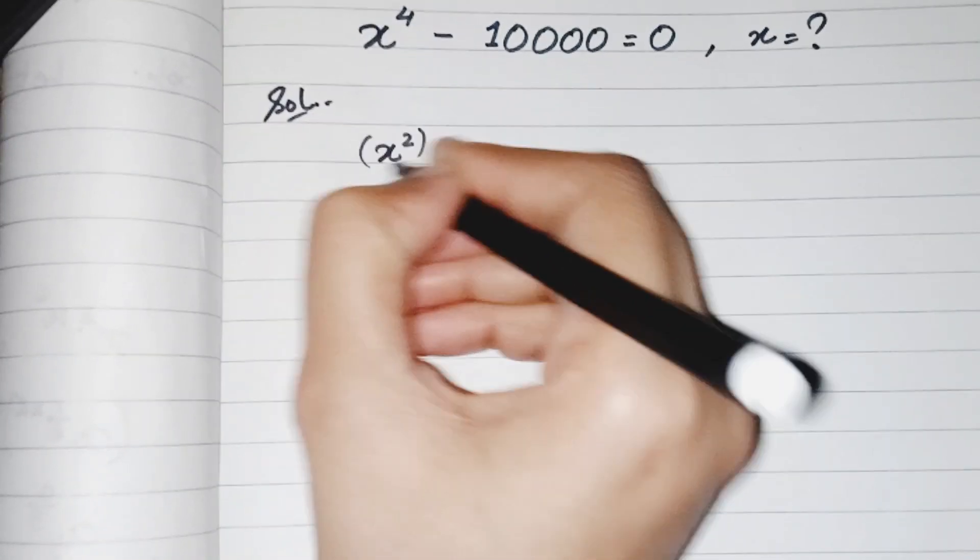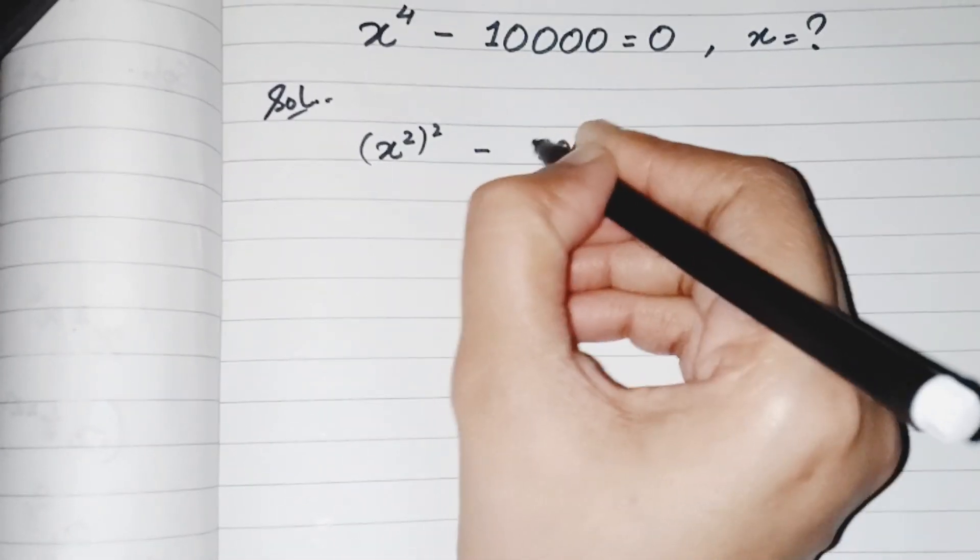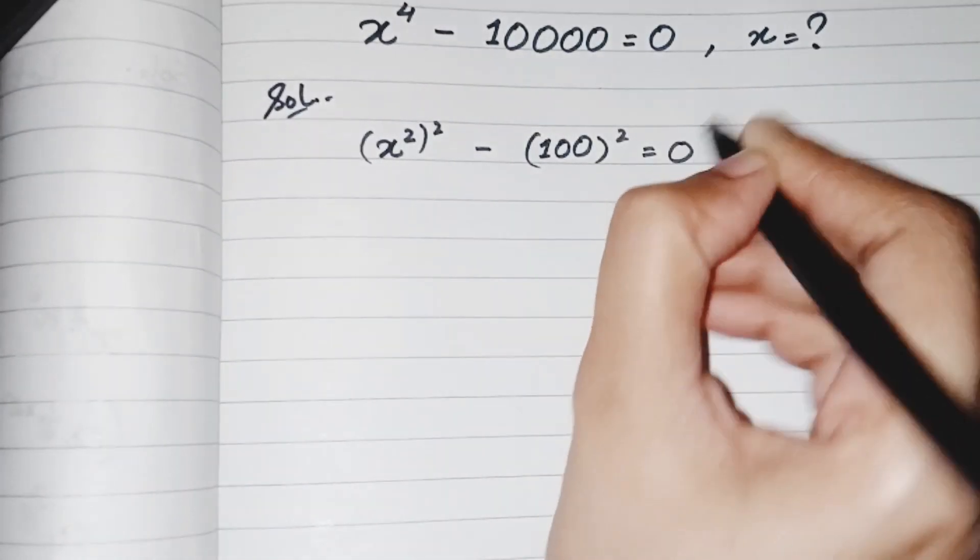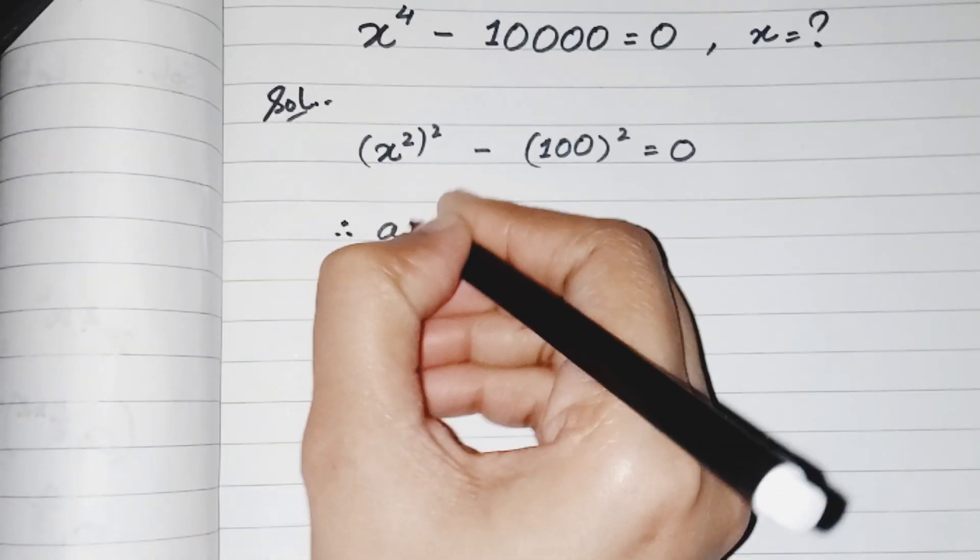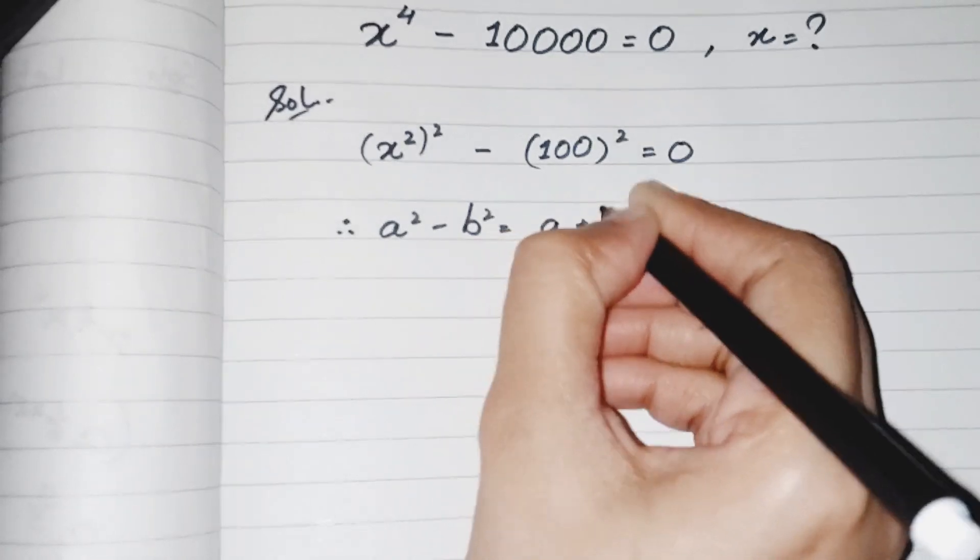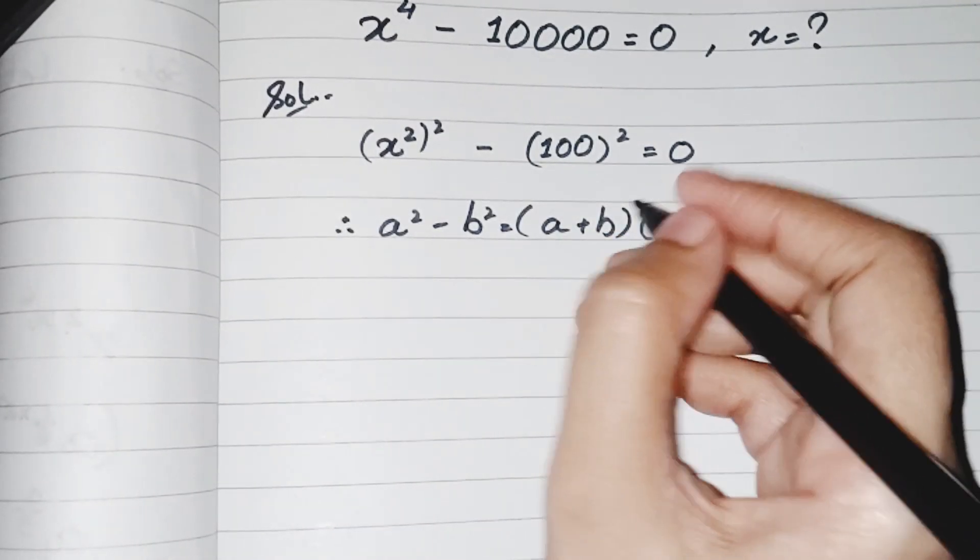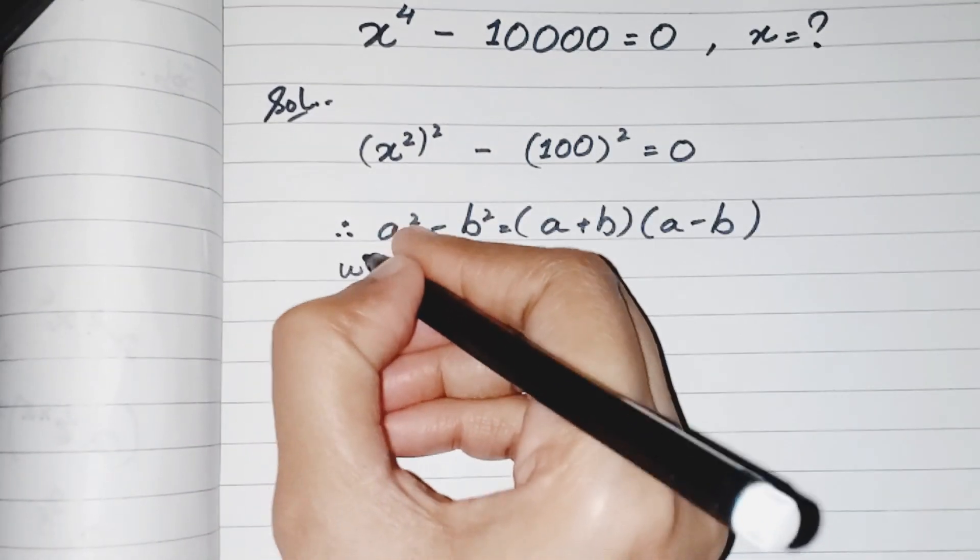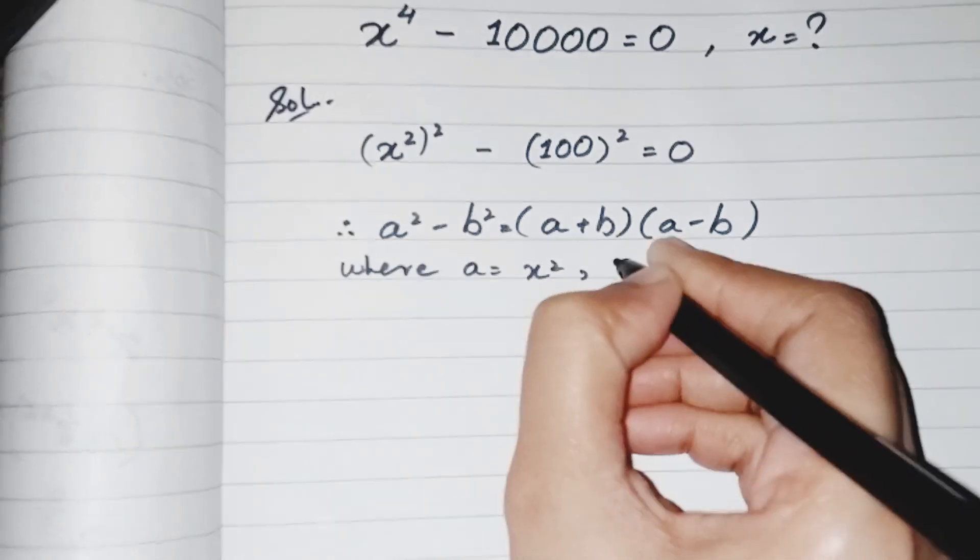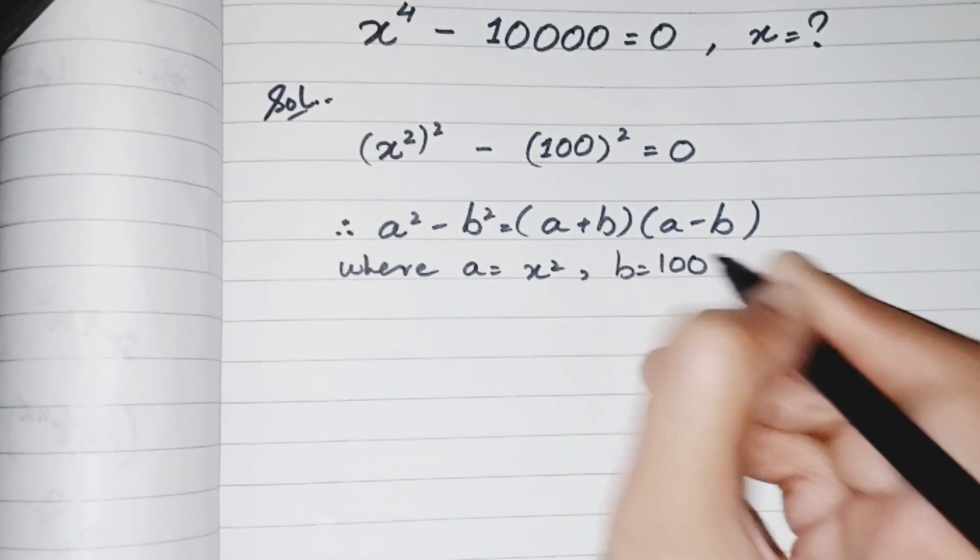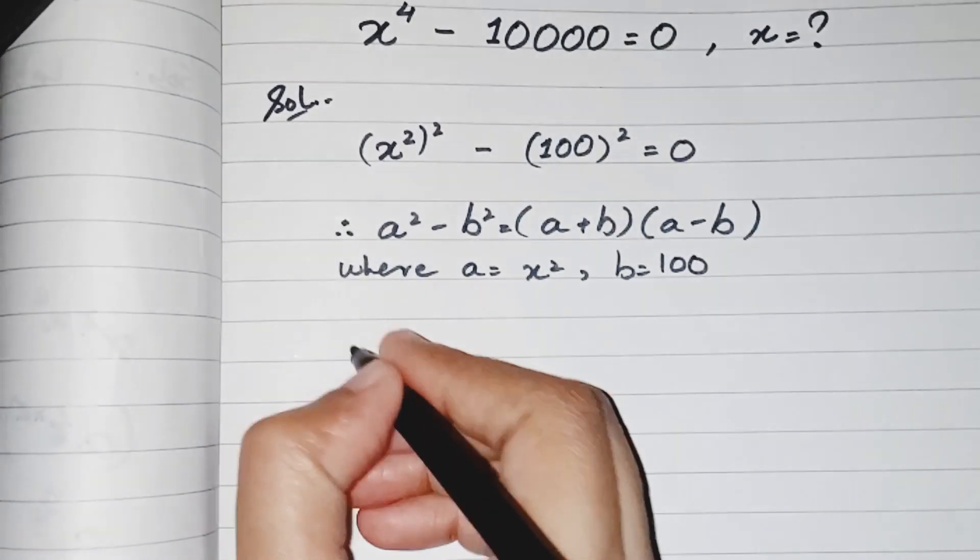I can say that hundred squared is also equals to 10,000. I have a formula which is a squared minus b squared equals to (a plus b)(a minus b), where a equals x squared and b equals 100.